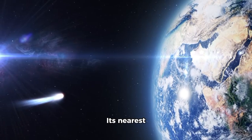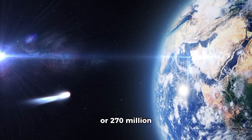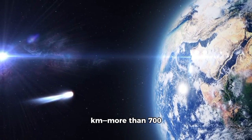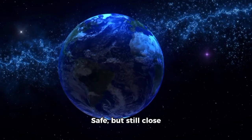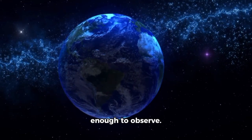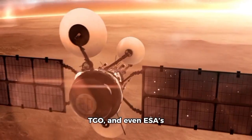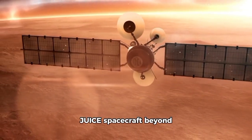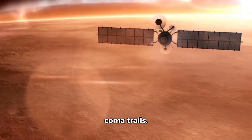Its nearest approach to Earth would be 1.88 astronomical units, or 270 million kilometers, more than 700 times farther than the moon. Safe, but still close enough to observe. And observe they did. Mars Express, ExoMars TGO, and even ESA's JUICE spacecraft beyond Jupiter prepared to examine its dust and coma trails.